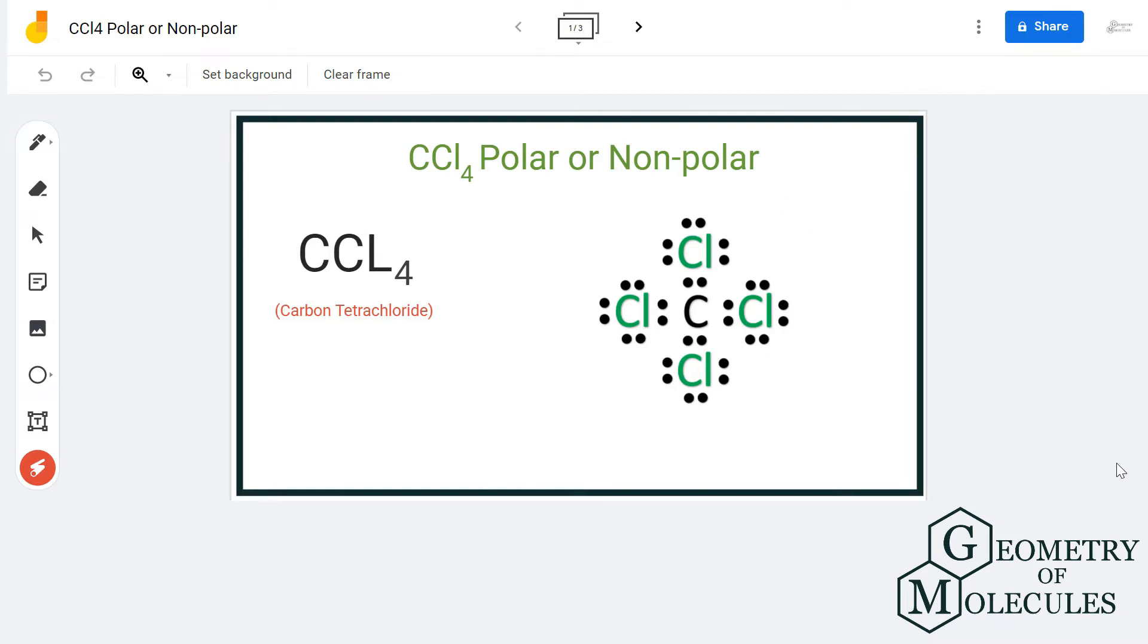Here is the Lewis structure of CCL4, in which a single carbon atom is sharing four valence electrons with all four chlorine atoms and forming single bonds. Although carbon has less electronegativity than chlorine atom, there are chances that there will be a net dipole moment of zero in this molecule.